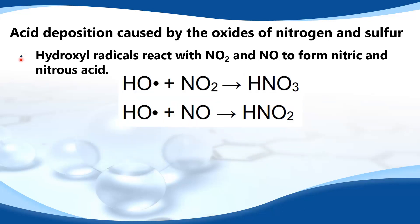Next, the hydroxyl radicals react with nitrogen dioxide and nitrogen monoxide to form nitric and nitrous acid. Here we have a hydroxyl radical reacting with nitrogen dioxide to form nitric acid, and here we have a hydroxyl radical reacting with nitrogen monoxide to form nitrous acid.